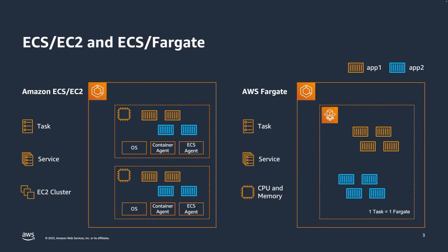In ECS, you can choose either a container instance (EC2 instance) or Fargate for your ECS task. You also have the flexibility to utilize a mix of both within a single ECS cluster. When you choose Fargate as the ECS cluster's computing engine, you can take advantage of that from a patching perspective around the ECS agent, and it is also heavily related to security.